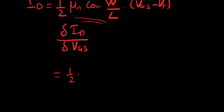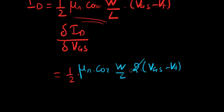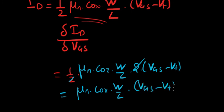Half times all these are constants correct? Half times mu N C ox W over L 2 times VGS minus VT. 2 and 2 get cancelled all you're left with is mu N times C ox times W over L times VGS minus VT. VT or VTH it really doesn't matter it's the same.